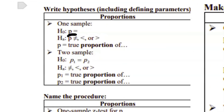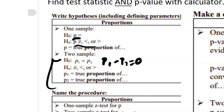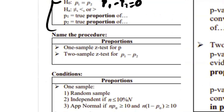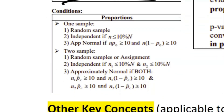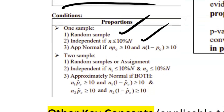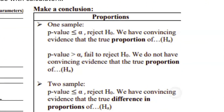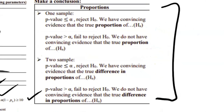For the actual test: one-sample involves p and Hₐ; for two-sample, instead of saying p1 equals p2 you can say p1 minus p2 equals zero — meaning no difference. The procedure name is the one-sample z-test for p, or the two-sample z-test for p1 minus p2. Conditions are random sample, 10% condition, and large counts — same as the confidence interval. For two-sample, verify all conditions for both samples.